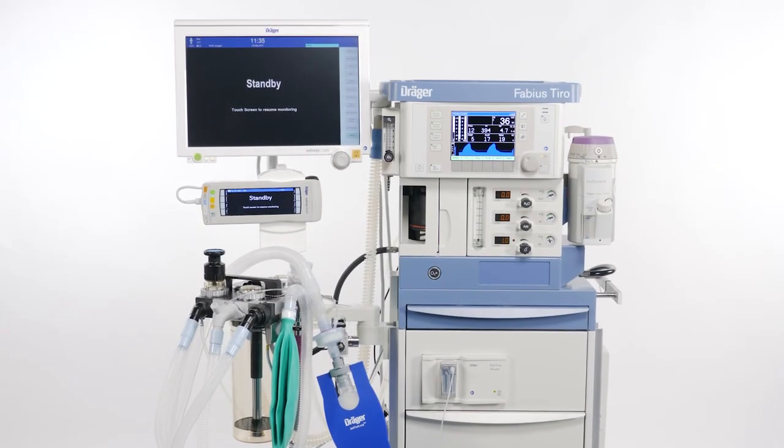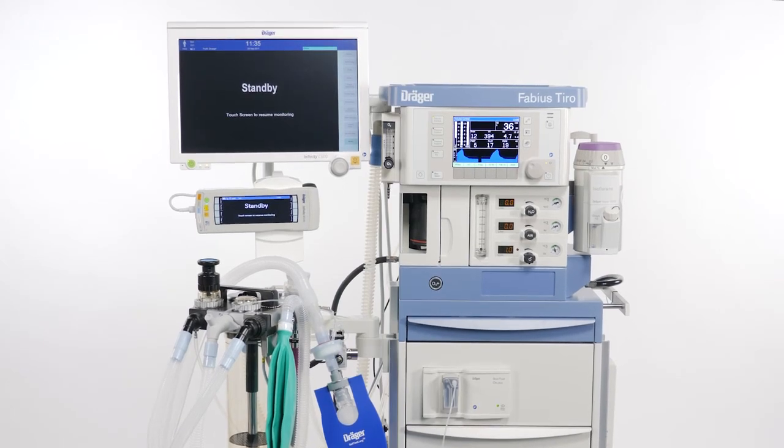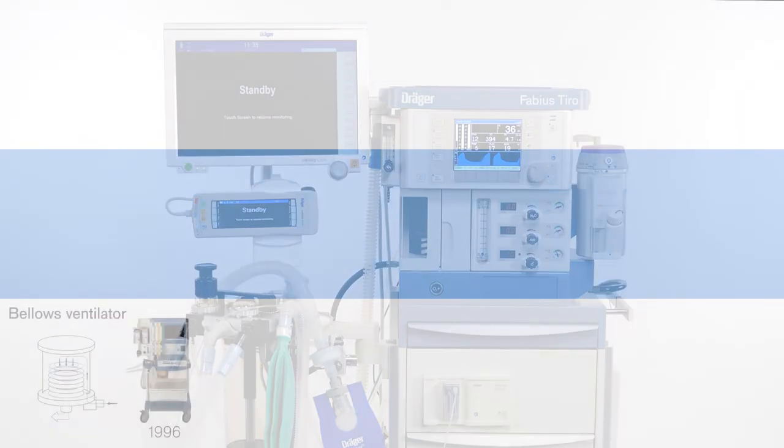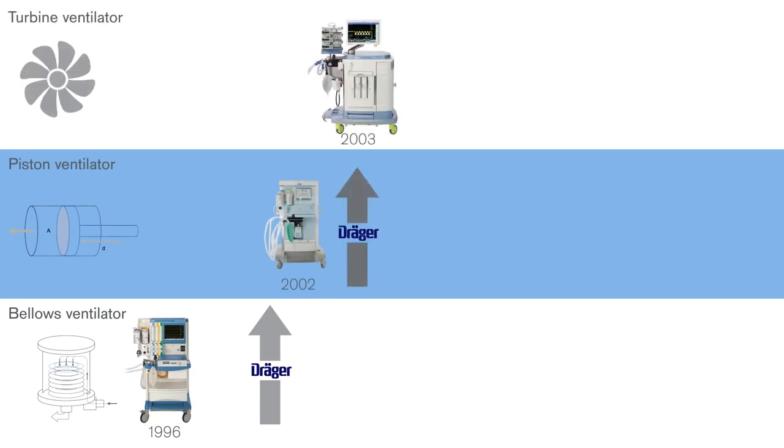The Draeger Fabius Tiro anaesthesia device is equipped with an electronically controlled and electrically driven piston ventilator. Draeger stopped using bag-in-bottle or bellows devices 15 years ago in 2002,